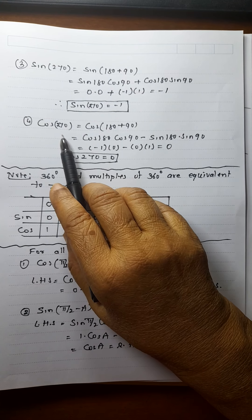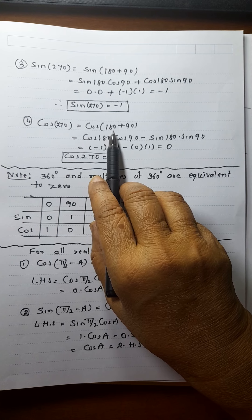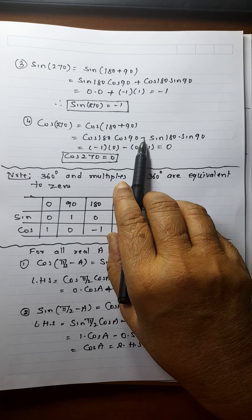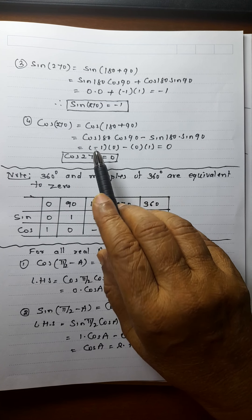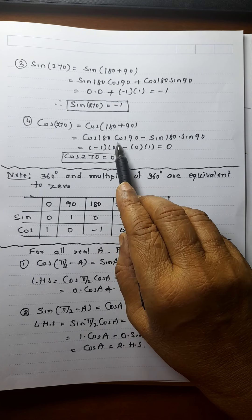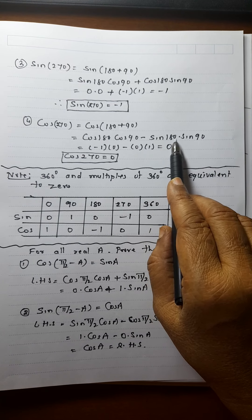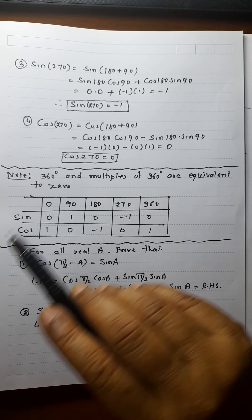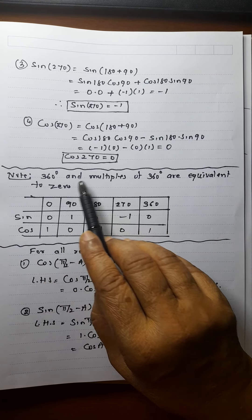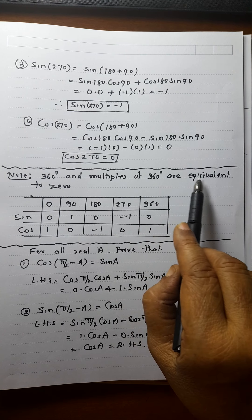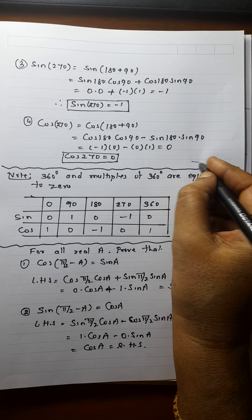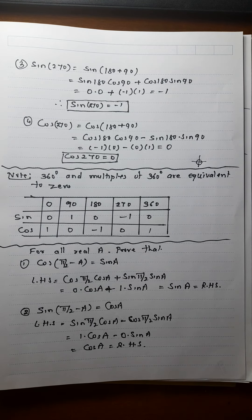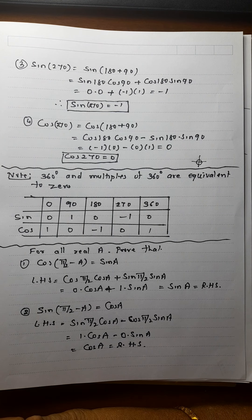Similarly, cos of 270° equals cos of (180°+90°). It is cos 180° cos 90° minus sin 180° sin 90°. Cos 180° is −1, cos 90° is 0, sin 180° is 0, sin 90° is 1. So the answer is 0. And 360° — multiples of 360° are equivalent to 0°, so this complete 360° is equivalent to 0° and all trigonometrical ratios will be the same.